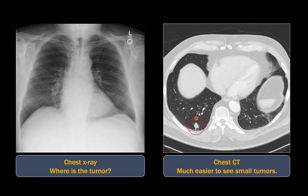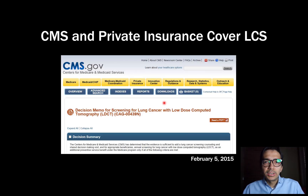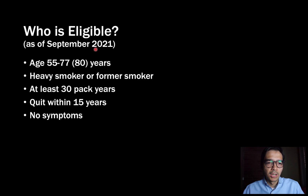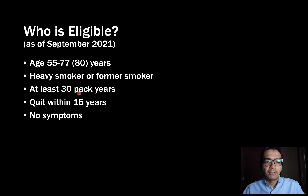In 2015, the Centers for Medicare and Medicaid Services added lung cancer screening with low-dose chest CT as a benefit for their patients, but it didn't include all patients. As of September 2021, these are the eligibility criteria — they will probably change in the not-too-distant future. The age range is 55 to 77, with some private insurances covering up to age 80. You have to be a heavy current smoker or a former smoker — by heavy I mean at least a 30 pack-year history.